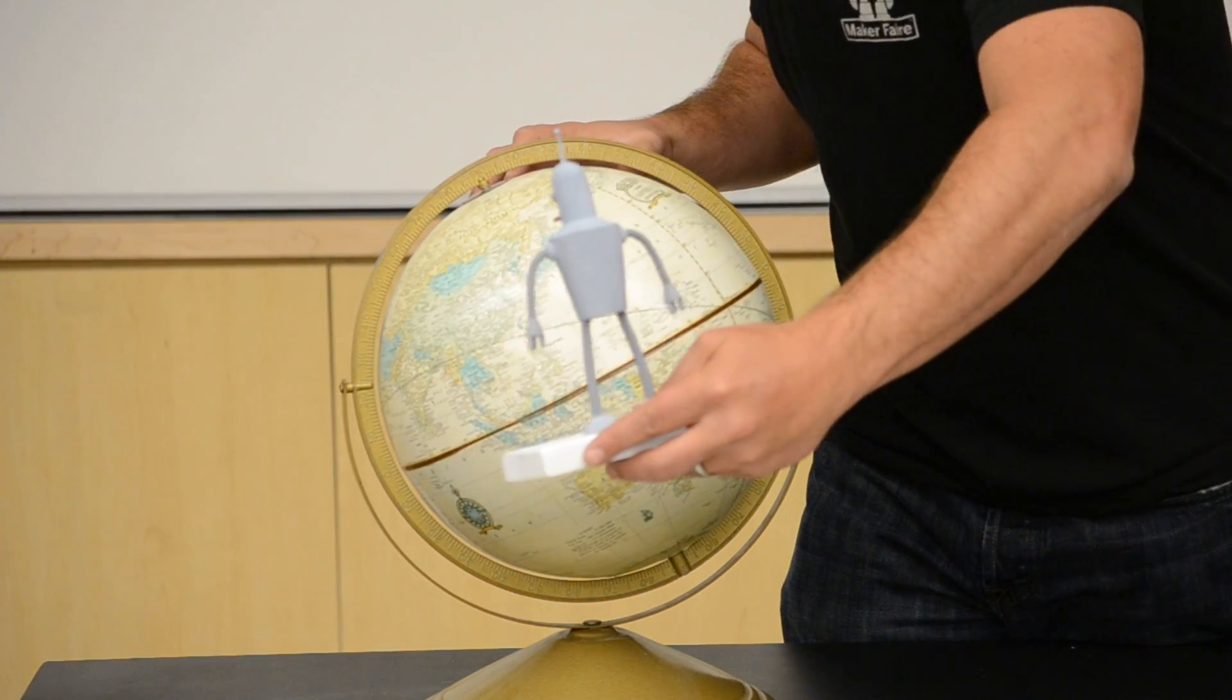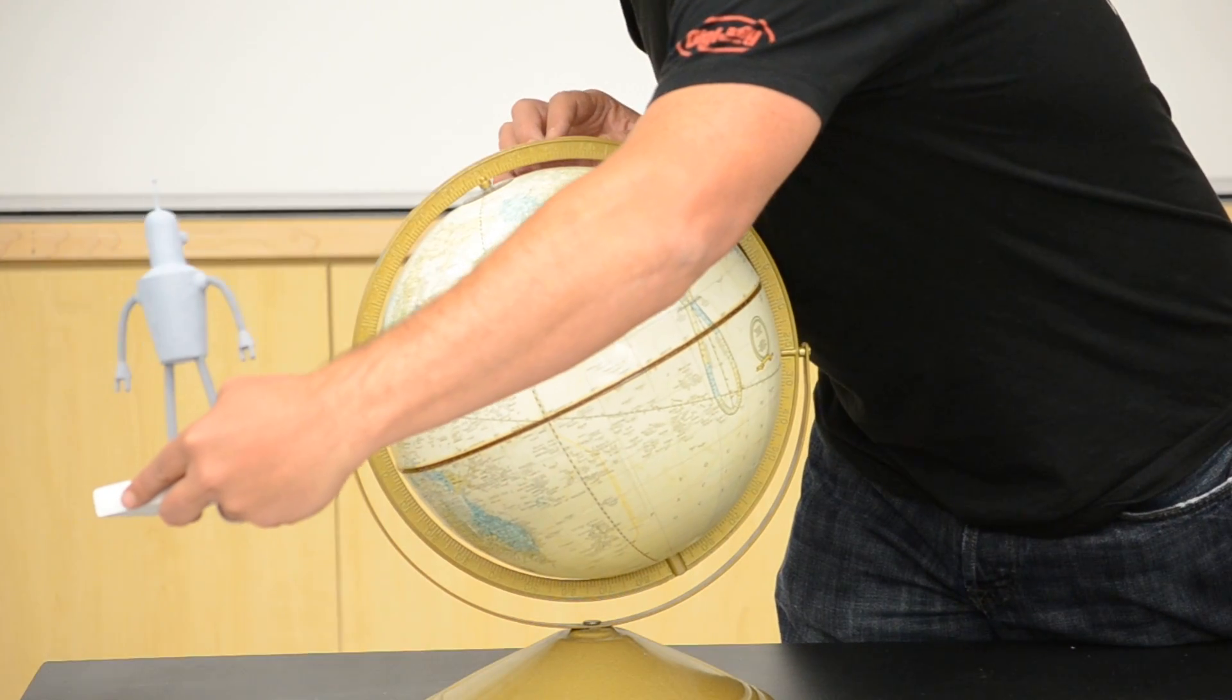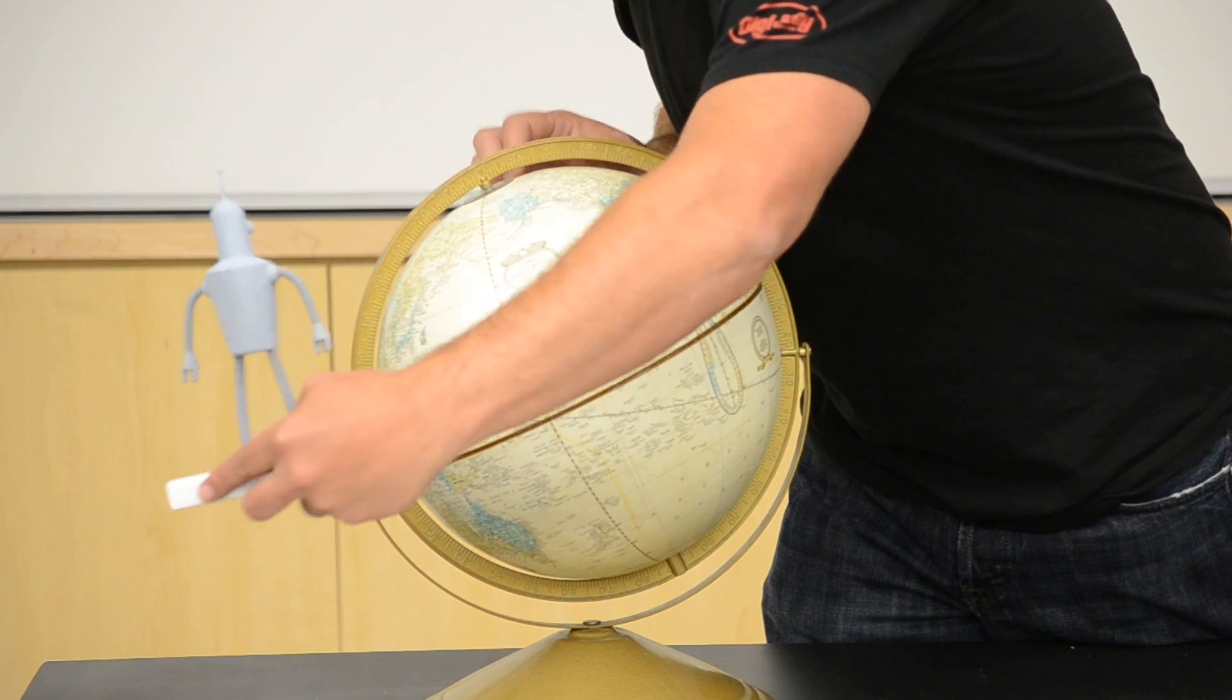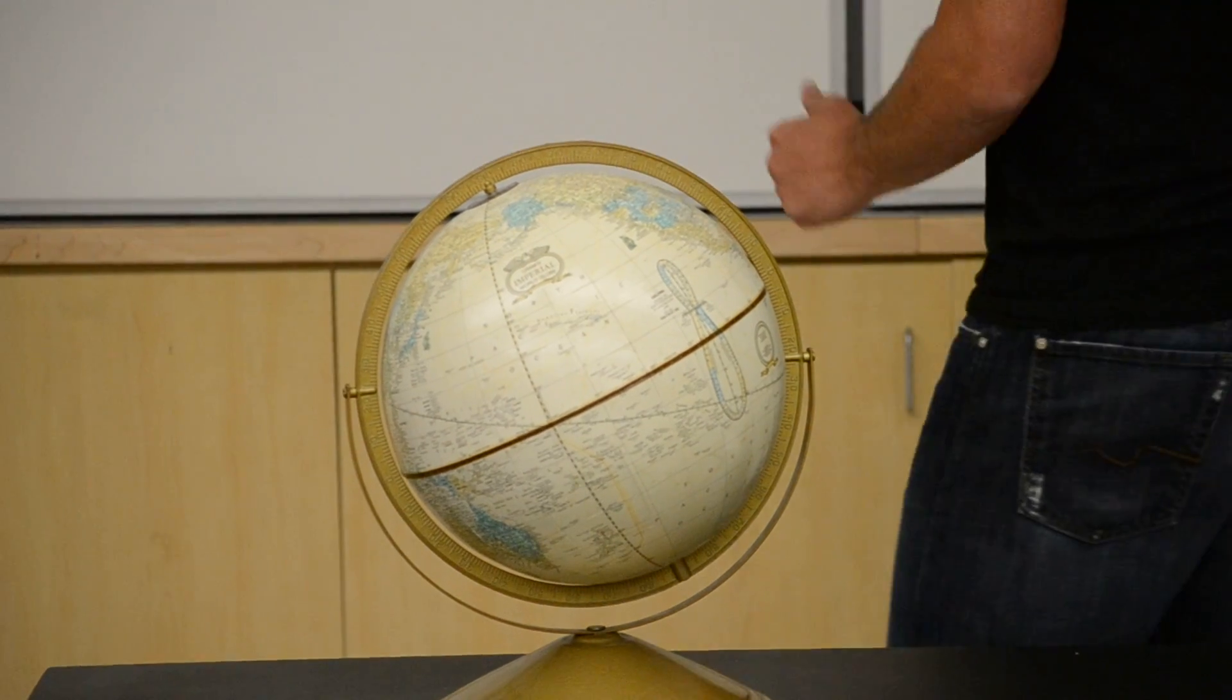So Bender tracks Japan perfectly, stays over the same spot. People get their TV in Japanese, which is good if you're Japanese. Great. That is geosynchronous orbit. Let's calculate what that height is.